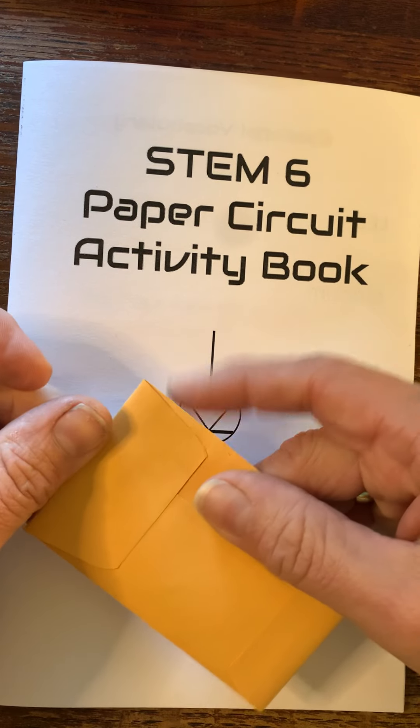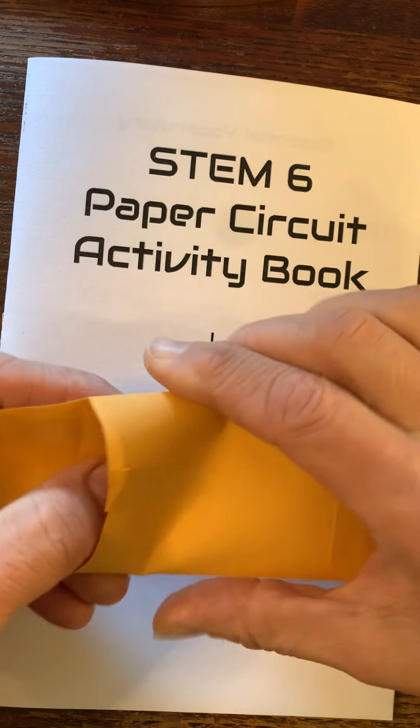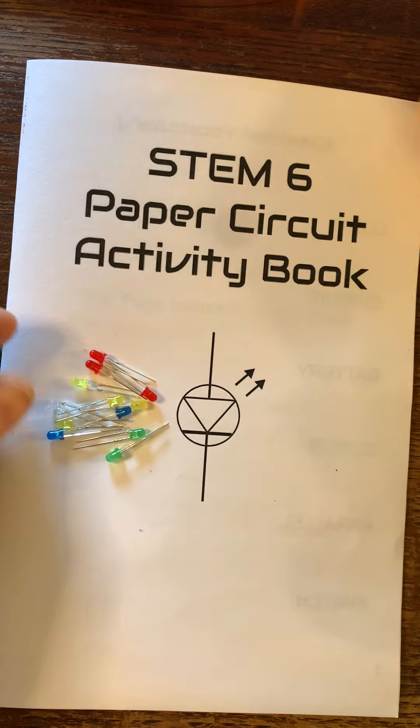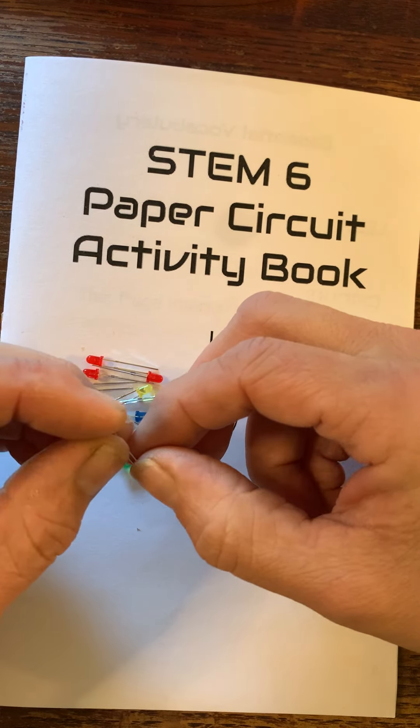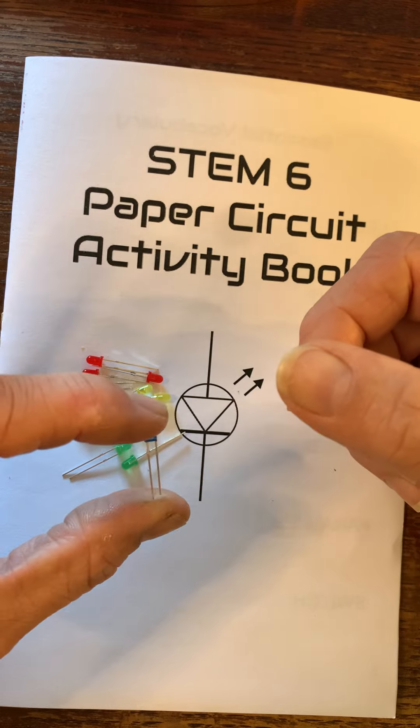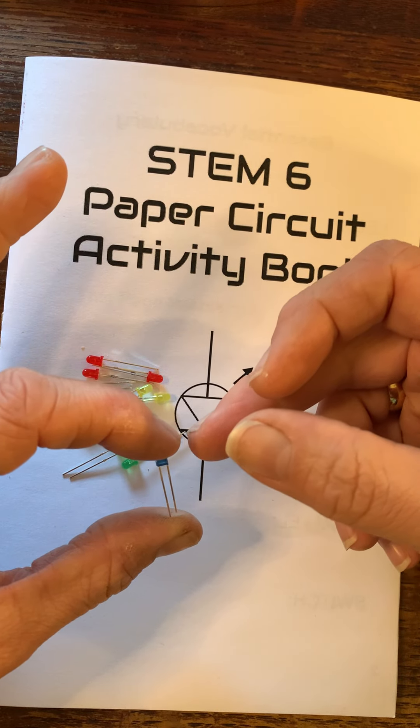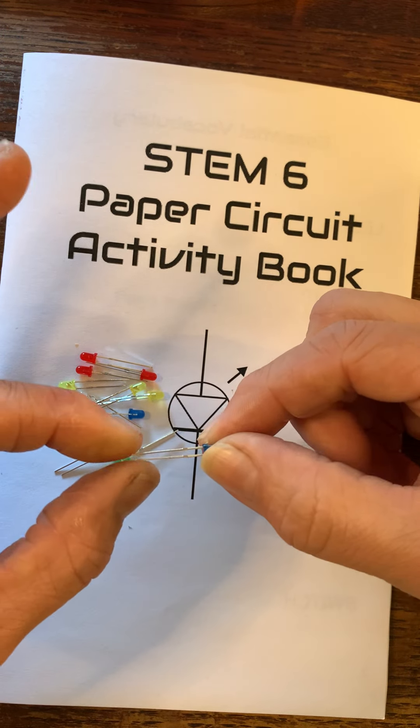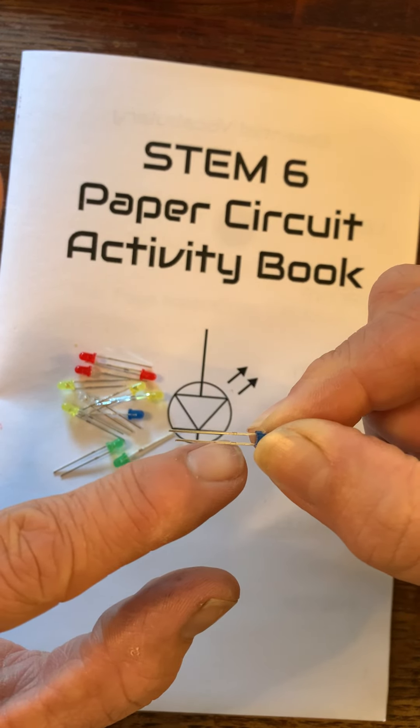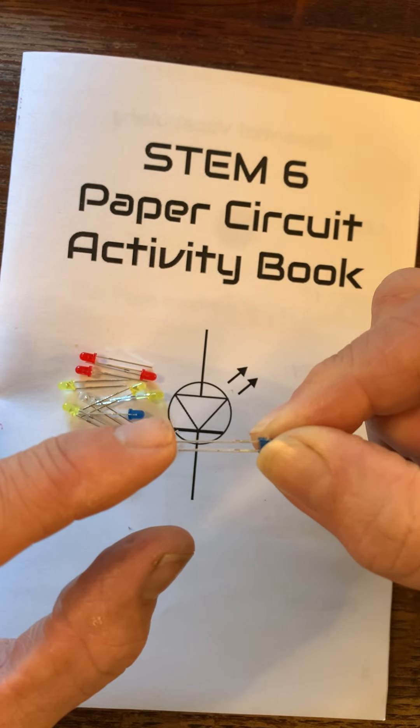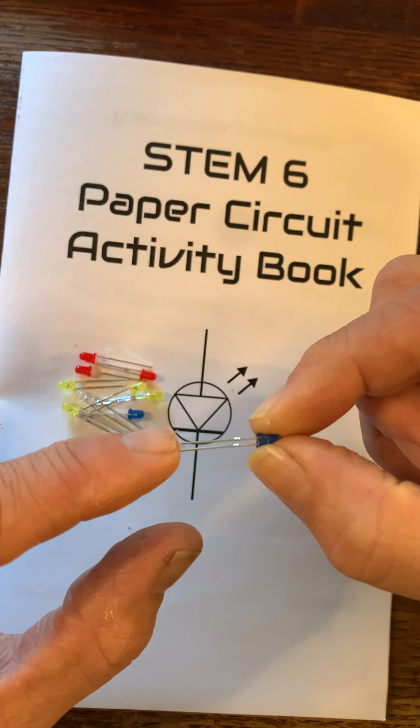Now you've got a small envelope here. In this envelope there are several LED light bulbs. These light bulbs are delicate. They will not burn out unless you really mess with them, but what can happen is the little legs on these things can bend and break off. So again be very careful with them.